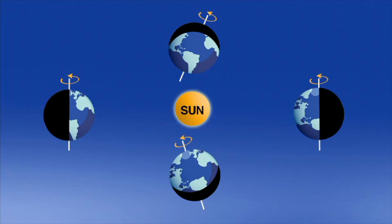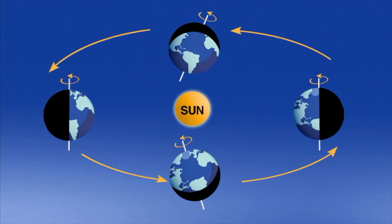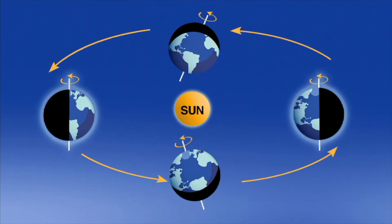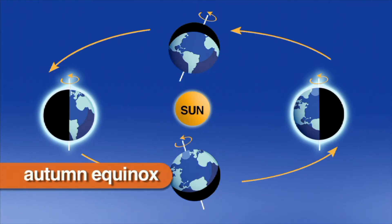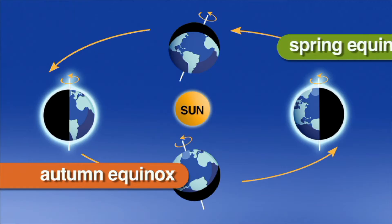During Earth's journey from summer to winter solstice and back again, it passes a point where the Earth is not tilting towards or away from the Sun because of its position in orbit. These days are the autumn and spring equinoxes.